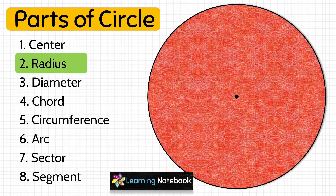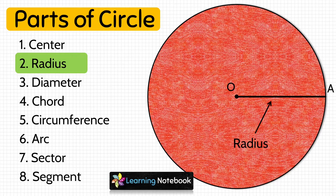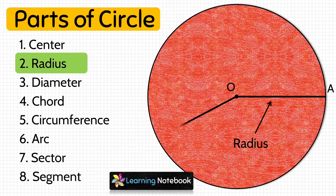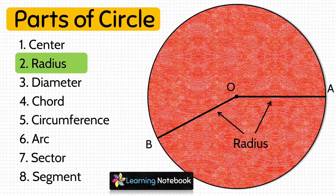Next we will learn about the radius of the circle. The line joining the center of the circle to any point on the circle is called the radius. Here, OA is the radius of this circle. Similarly, if we draw another line from center O to point B on the circle, then OB is also the radius. So OA and OB are both radii of this circle.